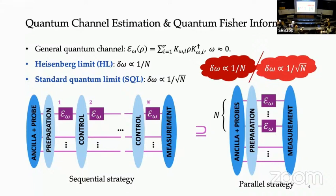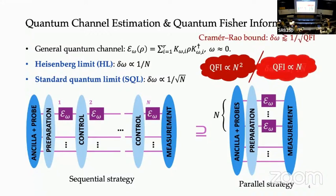You can achieve the standard quantum limit by using product states, without any entanglement. But to achieve the Heisenberg limit, you need some kind of entangled state or coherent evolution. These two limits can equivalently be stated in terms of quantum Fisher information through the Cramér-Rao bound: the estimation error is at least 1/sqrt(QFI). If the Fisher information scales as N², you achieve the Heisenberg limit; if it scales linearly with N, you achieve the standard quantum limit.